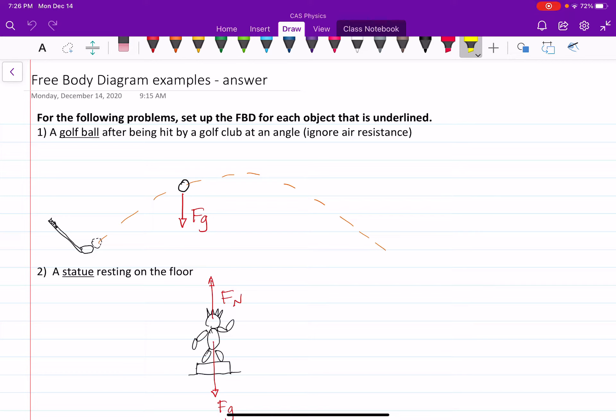So for the first question, it was a golf ball being hit by a golf club at an angle, but the key thing here is the after. So it's like the golf club hits the golf ball, but then the ball goes flying. We're not asked the question of what happens while the club is hitting the golf ball, but what's going on with the golf ball while it's in the air?